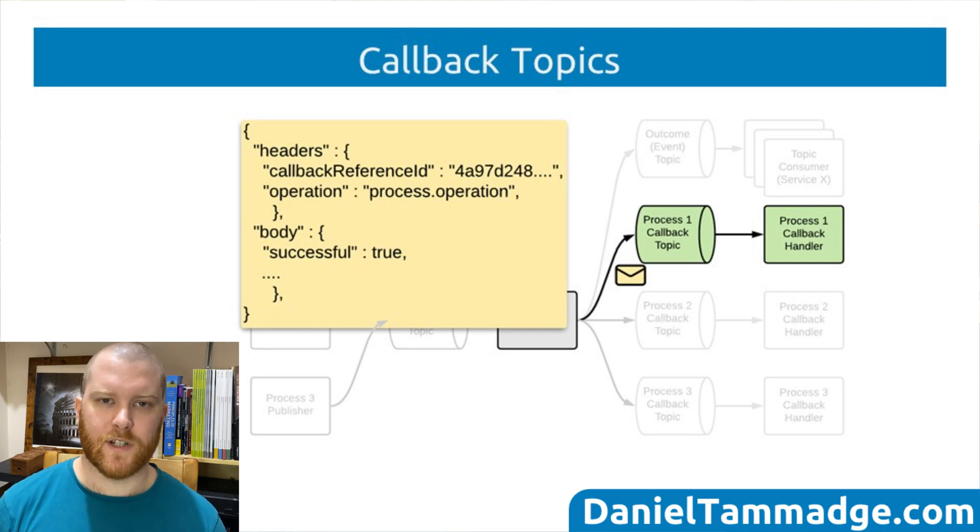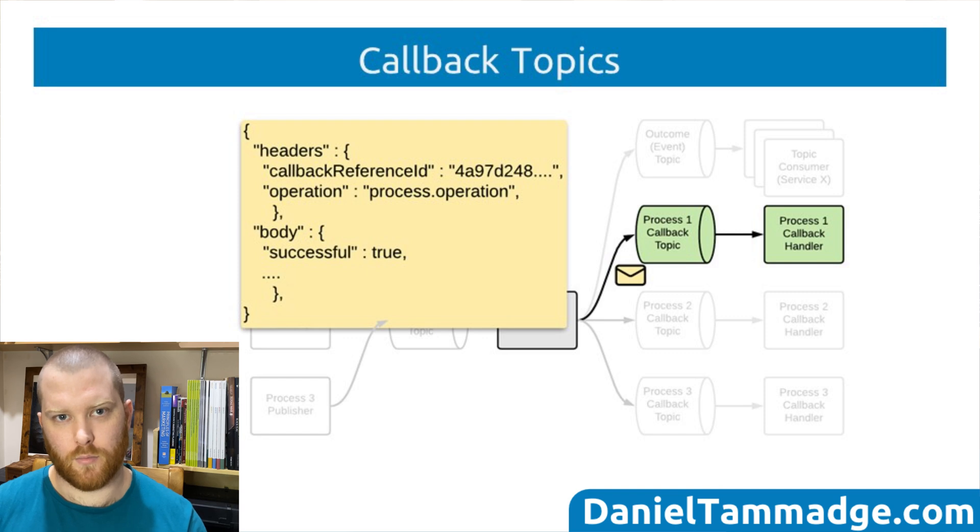And that message would also contain the callback reference ID, which was passed in the original message so that the consumer of that event can use that identifier to correlate and reconcile objects, which it's needing to process.